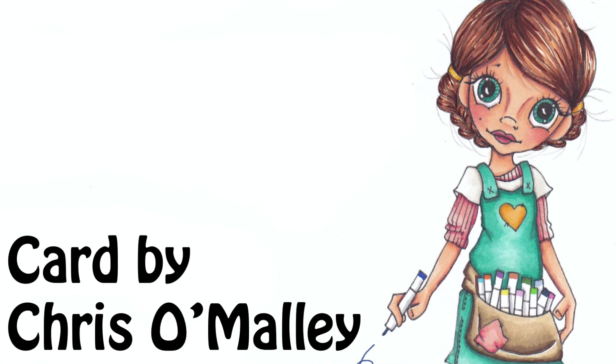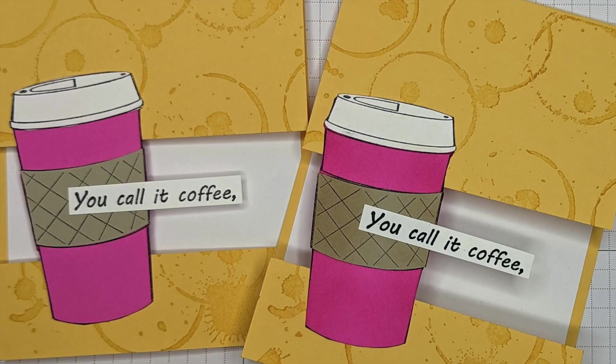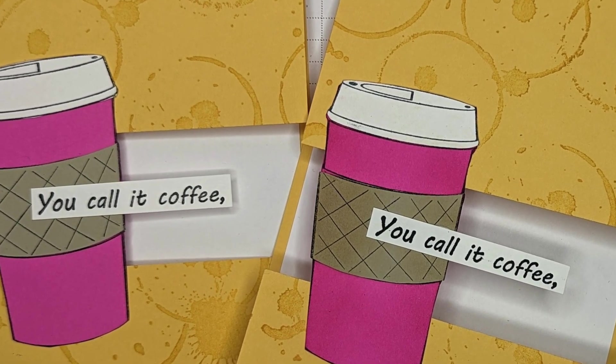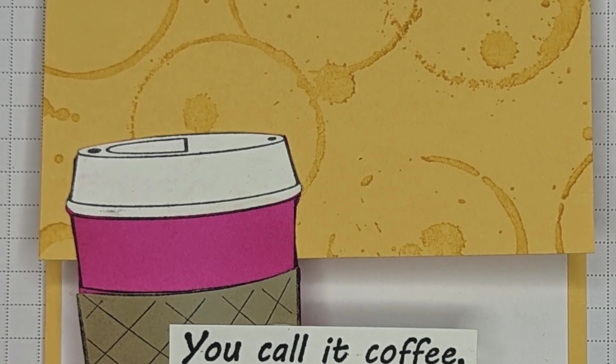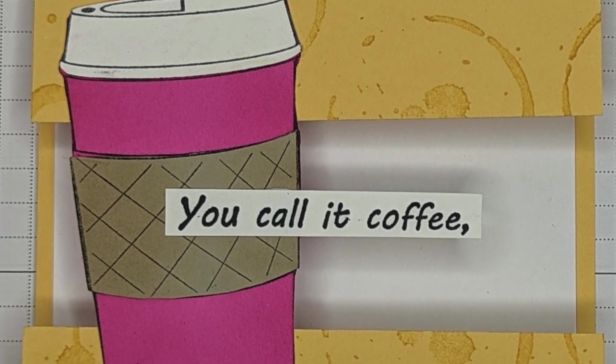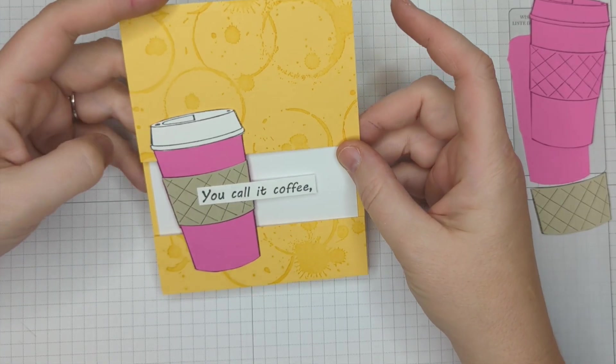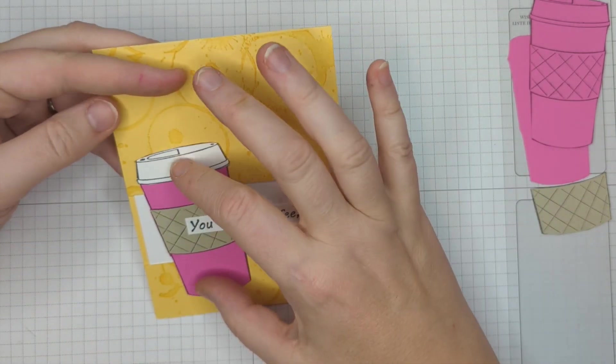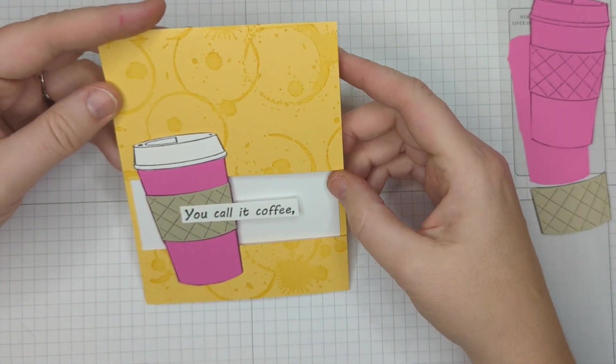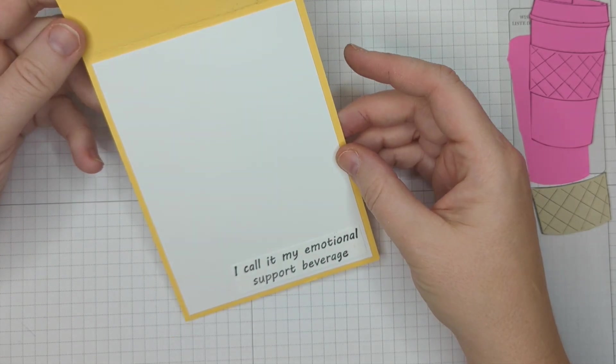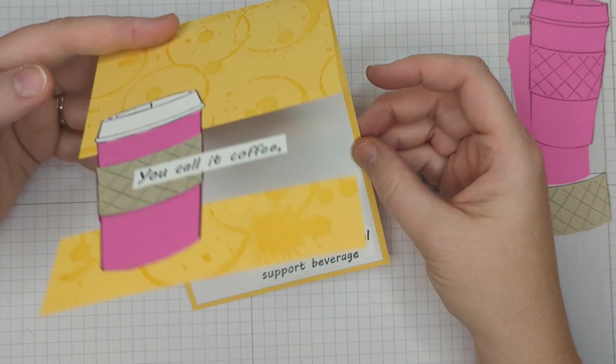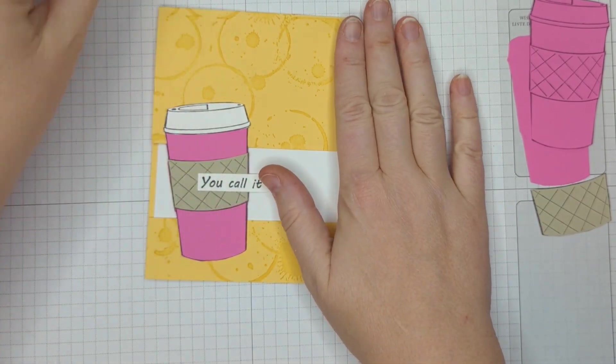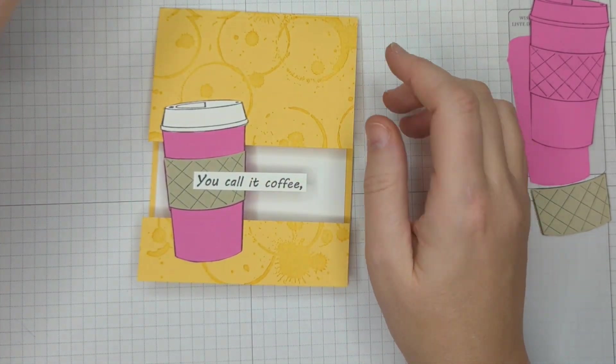Hello guys, I'm back with another fun card. This is called a floating panel card. Again, I just love things that make the standard A2 card just a little bit more interesting, kind of create that wow element. So here we have this area that's cut out in the two, the coffee cup is holding the panels together. So it says you call it coffee, I call it an emotional support beverage. So isn't that just a really fun, easy way? Let me show you how to cut off this paper to make this card a reality.